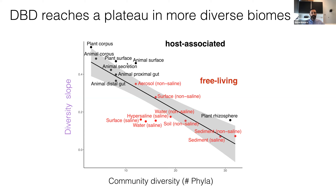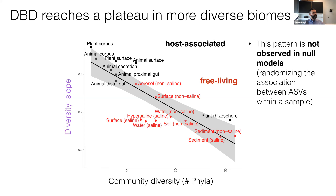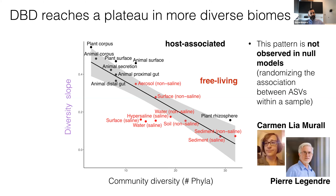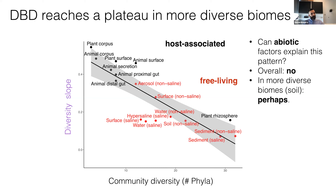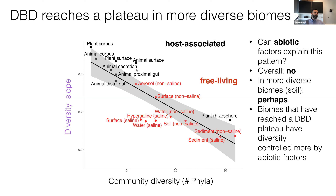Importantly, this pattern is not seen in a null model where we randomize the data table — work done by postdoc Cardinali and Moral with Professor Pierre Legend. Abiotic factors also seem unable to explain this pattern overall, though possibly in soil. In a particular soil dataset, biomes that have reached the plateau of DVD may have their diversity controlled more by abiotic factors once niches are saturated.